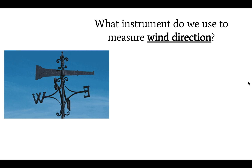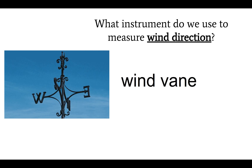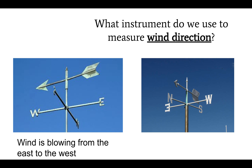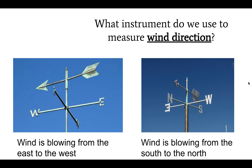Lastly, what instrument do we use to measure wind direction? The instrument we use to measure wind direction is called a wind vane. As you can see, the arrow moves with the wind, and in fact it will always point in the direction that the wind is blowing to. So in the first picture, which way is the wind blowing? The wind is blowing from the east to the west, and we know that because the arrow is pointing towards the W for west. In the second picture, which way is the wind blowing? The wind is blowing from the south to the north because the arrow is pointing to the N for north.